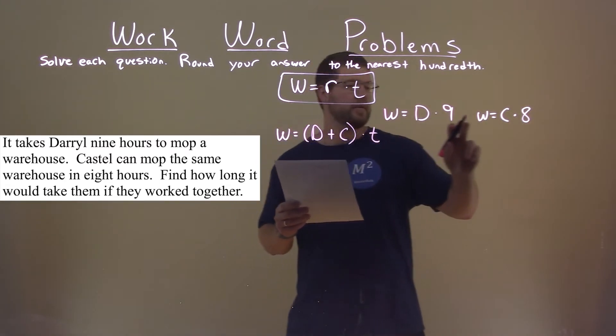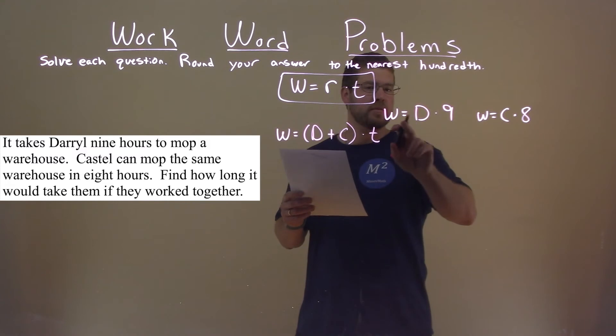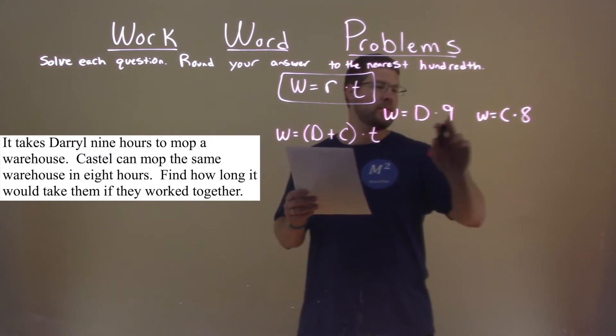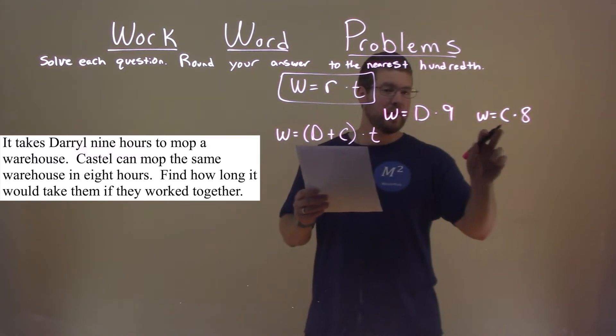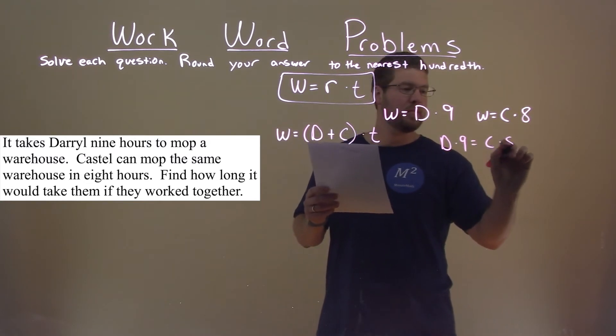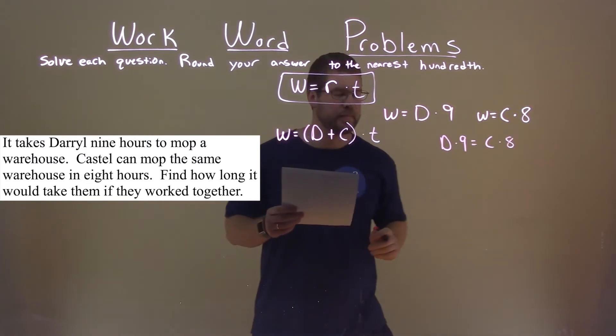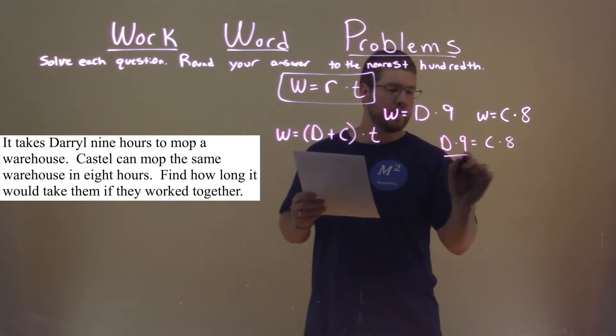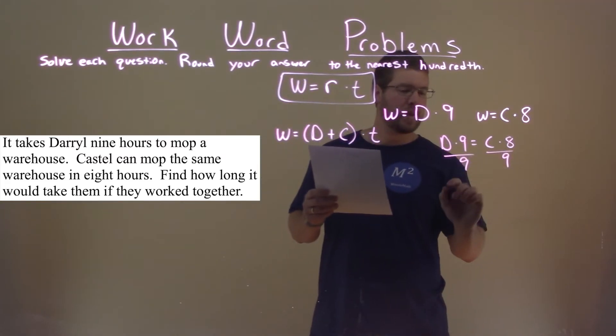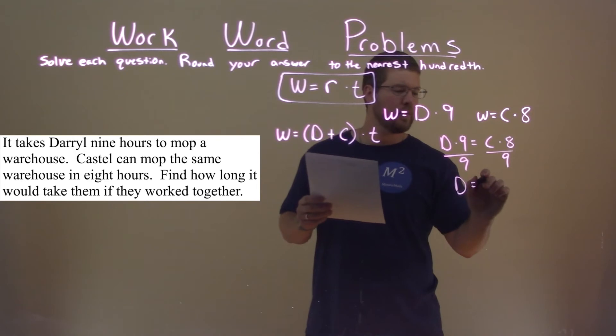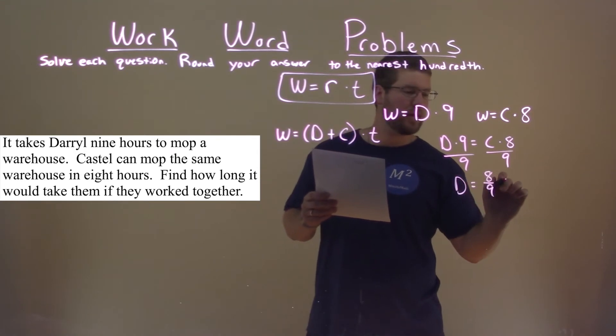So, for Daryl's work and Castle's work, we want to set them equal to each other. D times nine equals C times eight, because they're both equal to W. Solving for D, we divide nine on both sides, and we're left with D equals eight ninths times C.